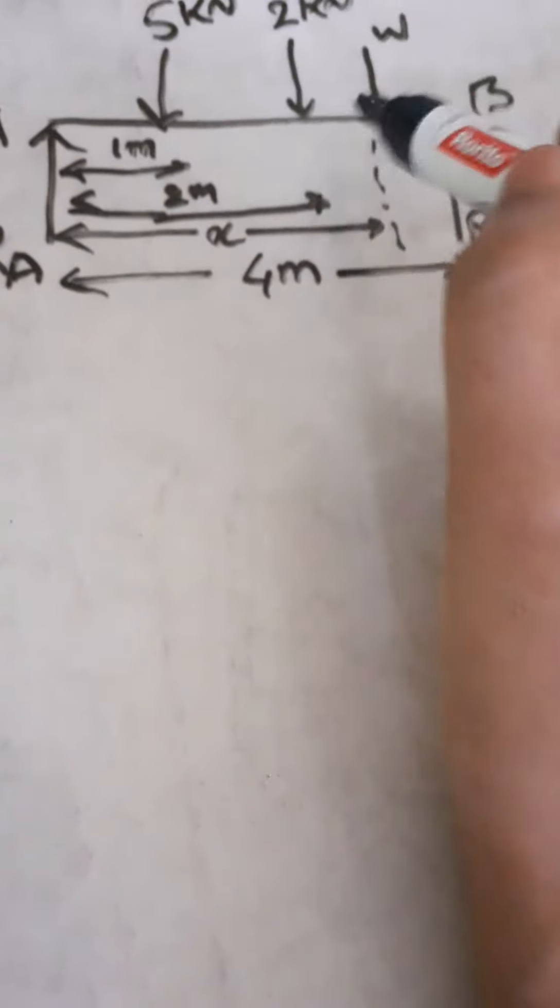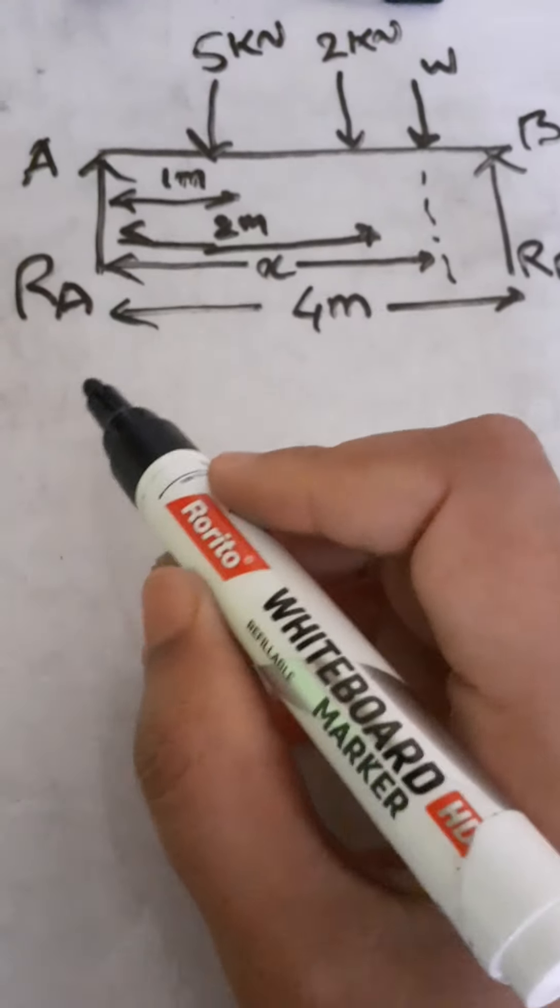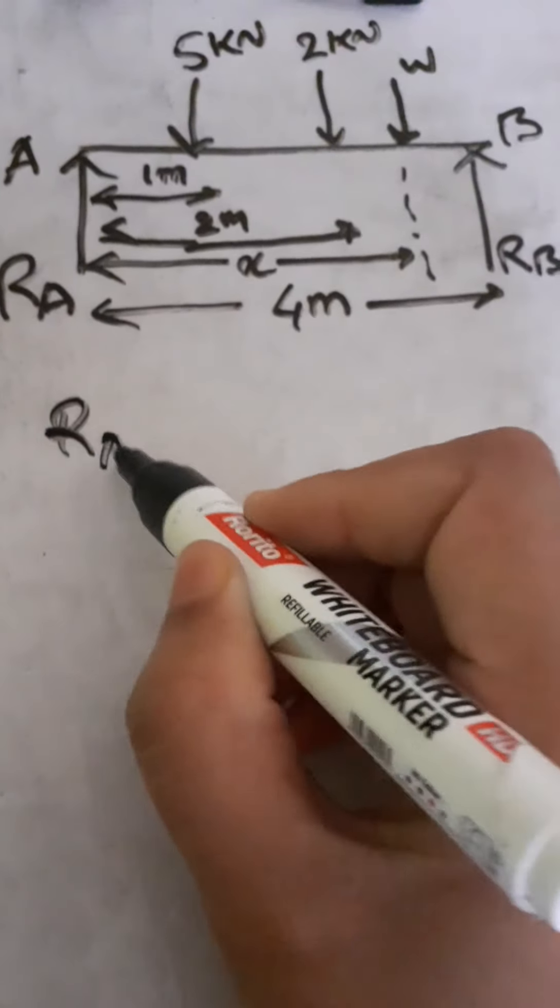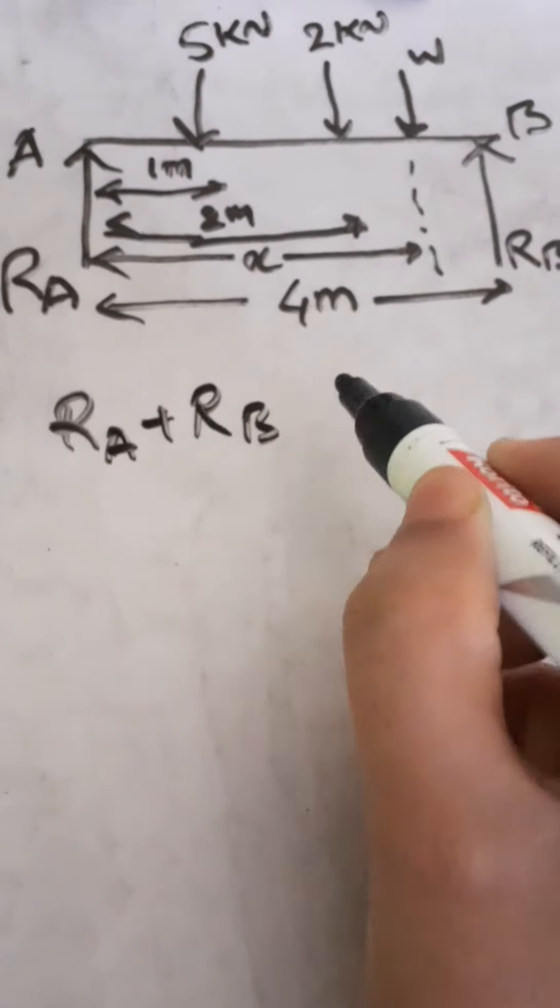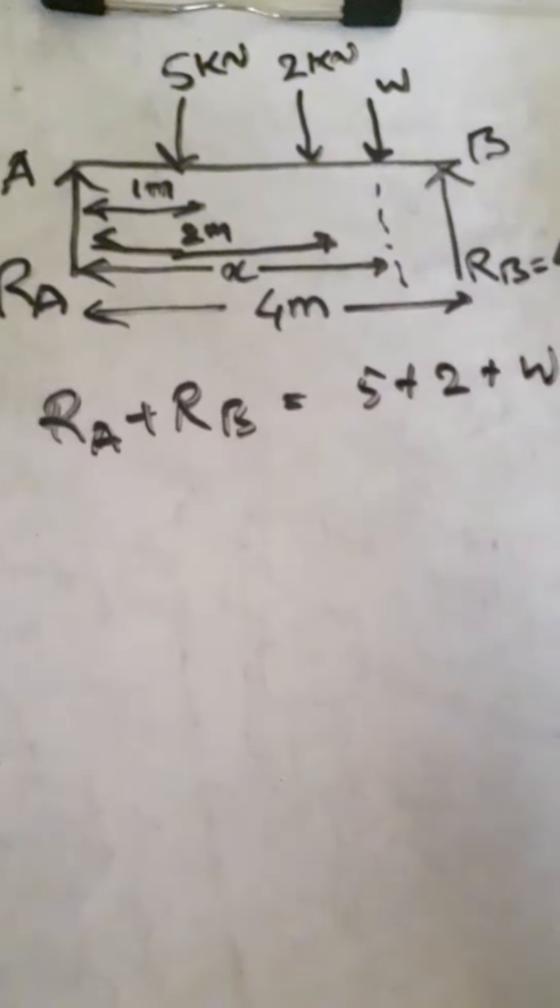Now we need to find out the load W. Here we have to resolve the upward forces, so we have to resolve the vertical forces. Then we get RA plus RB is equal to 5 plus 2 plus W.